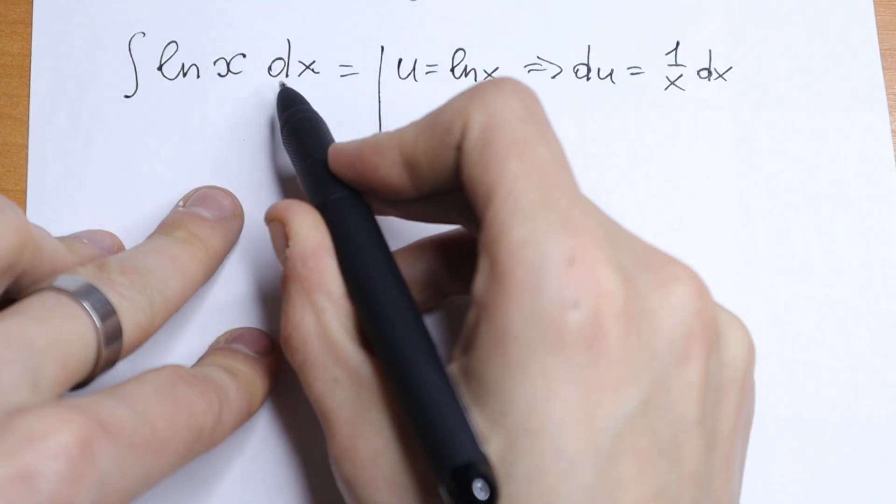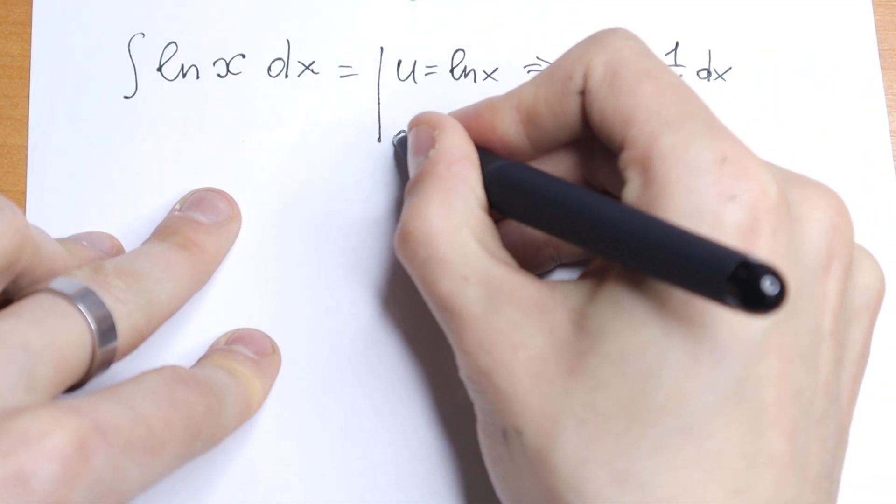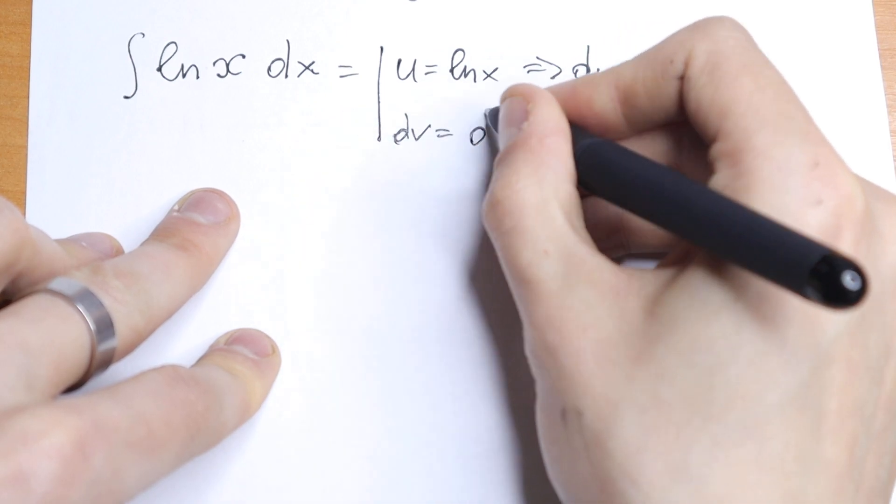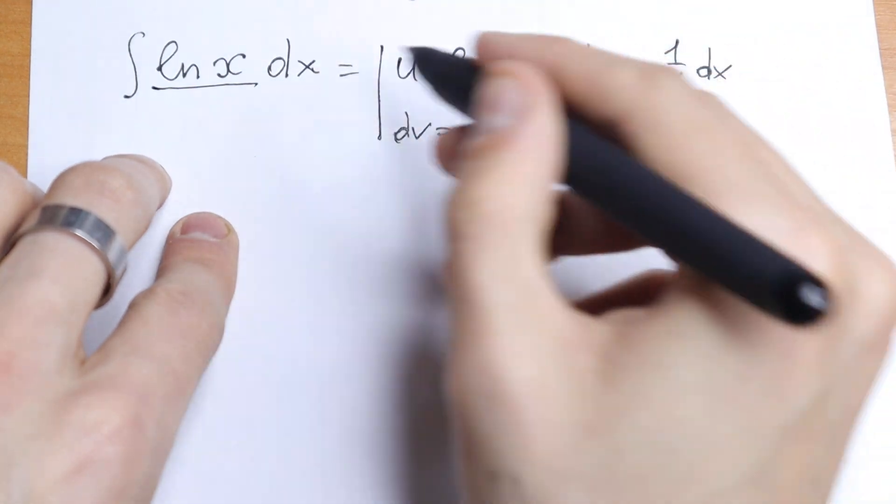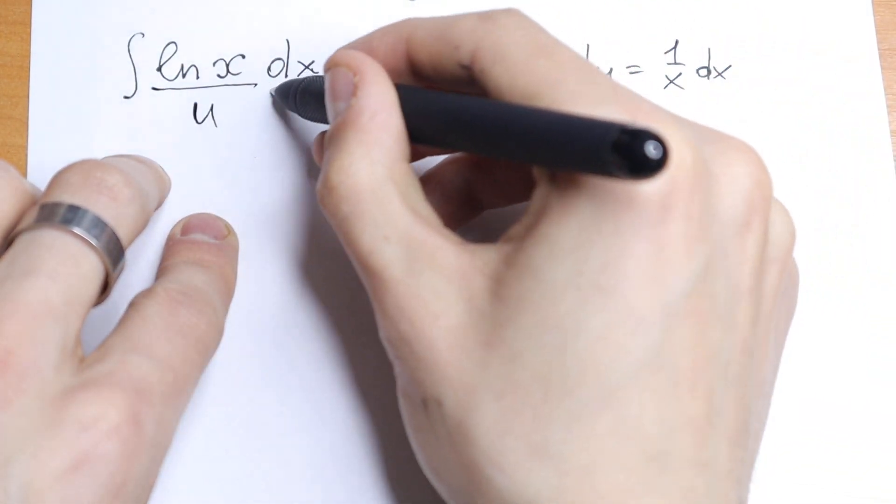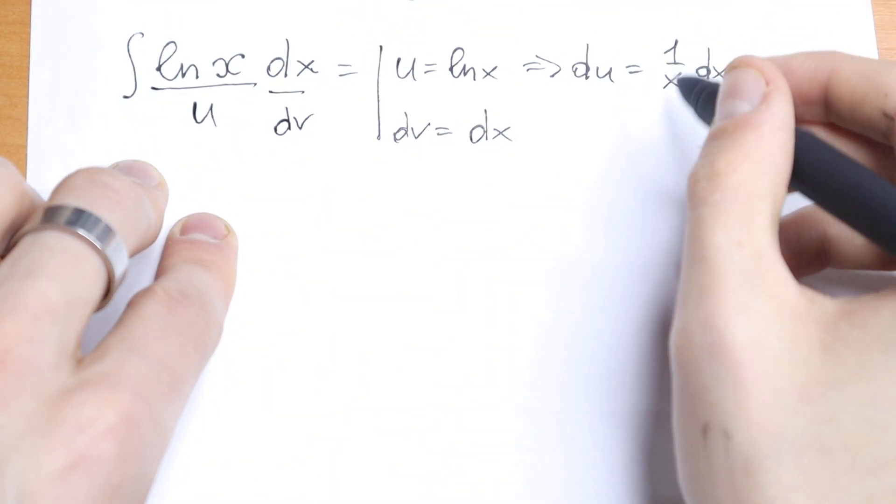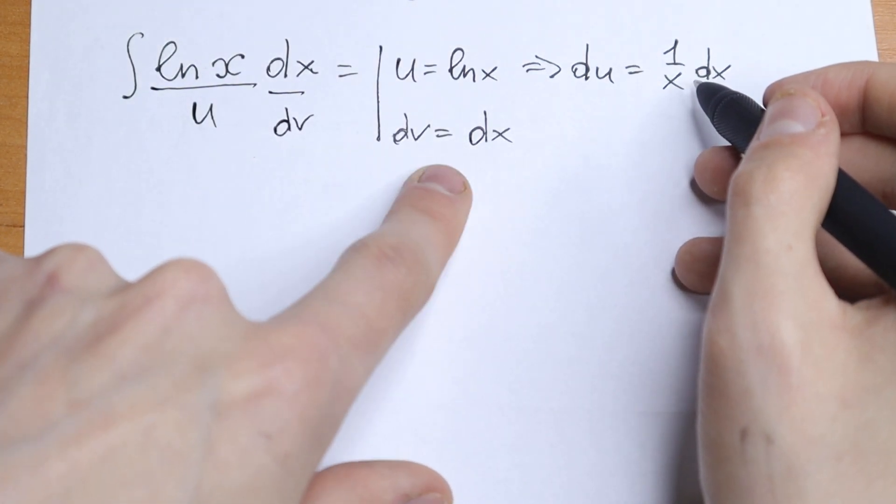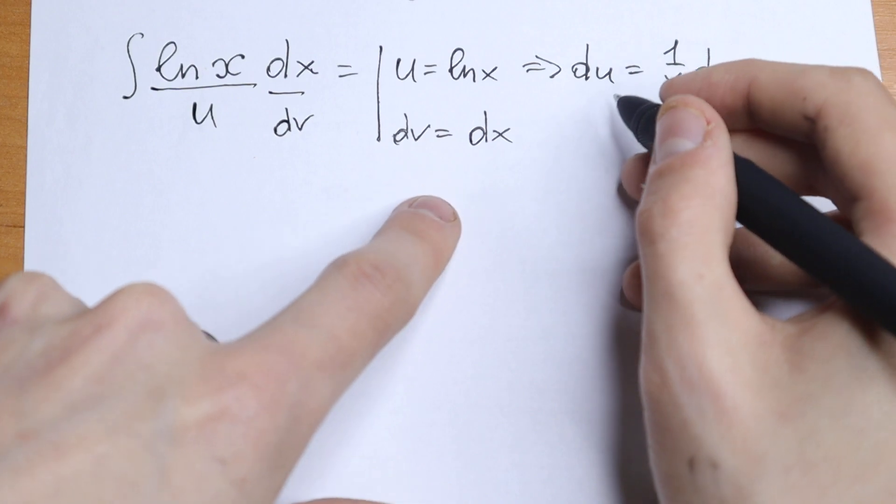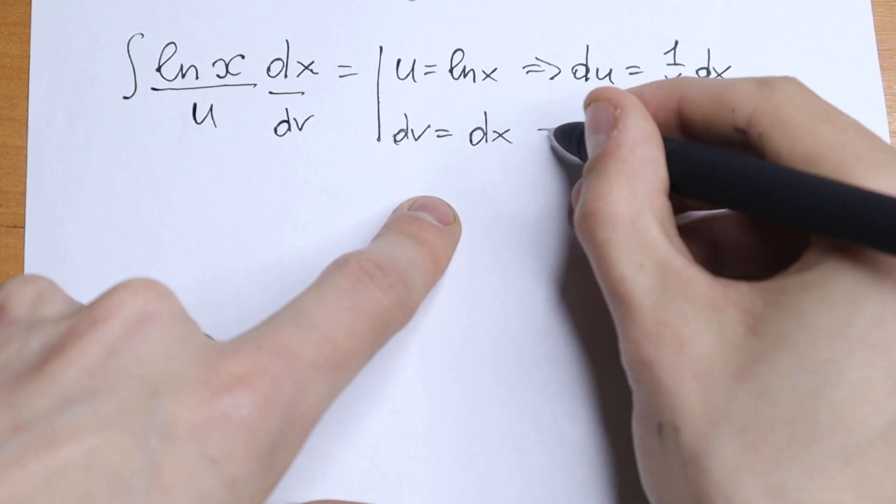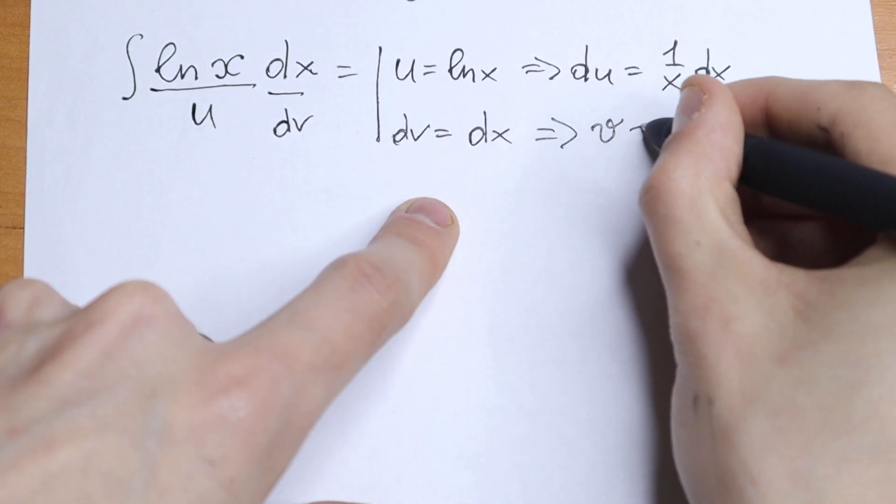Right here we have dx, so our dv will be equal to dx. This will be our u, and this will be our dv. And let's find the integral. This looks like a hard moment, but we can easily find our integral. So from here our v equals x.